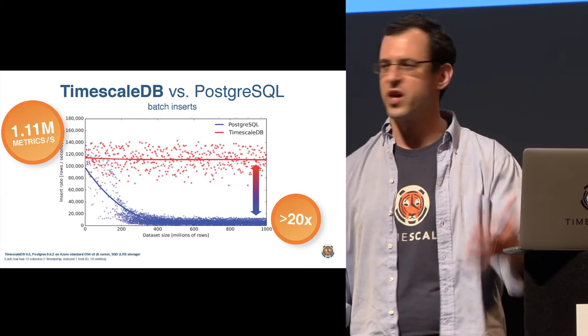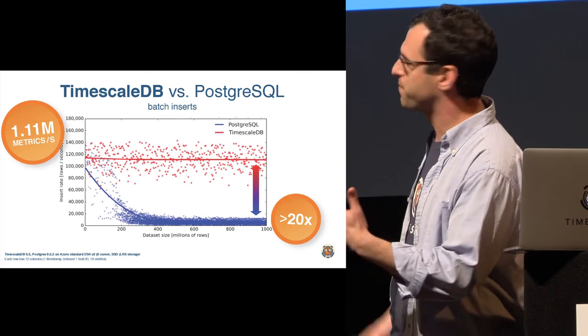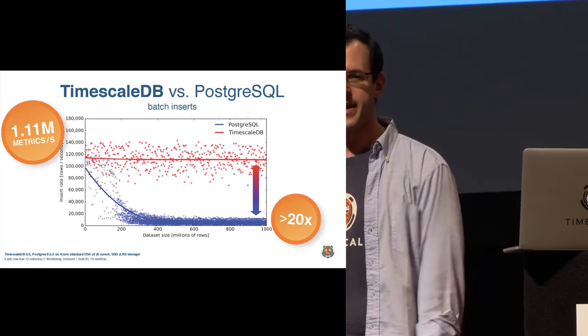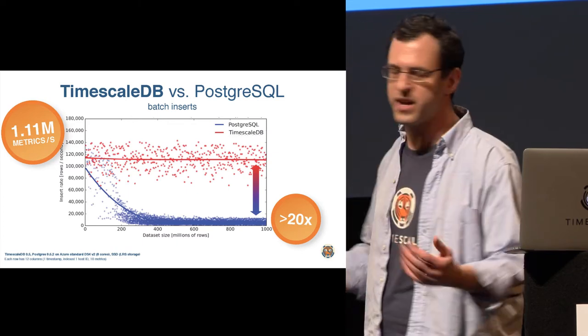If you extend this to larger batch sizes, here's the database going to a billion rows. Postgres is really good when everything fits in memory, and then goes off its cliff. When timescale maintains this pretty consistent performance, until you see this 20x performance gap. This is a standard box in Azure.